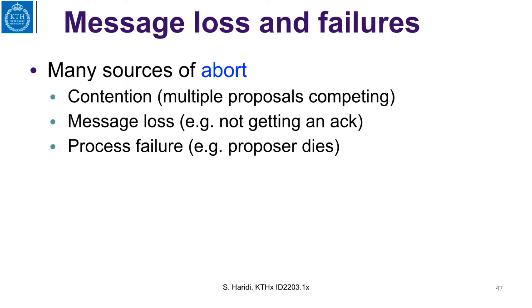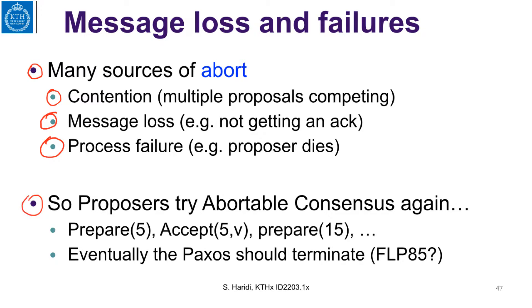The first issue is that there are many sources of abort. We can have contention, where multiple proposals are competing — we will see an example of this. We can also have message loss, since the algorithm does not require reliable links, so you might not get the accept. You can also have process failure, like a proposer dying, but you still must have a majority of acceptors surviving. Proposers retry with a higher sequence number, doing prepare, followed by accept, then prepare again, and so on.